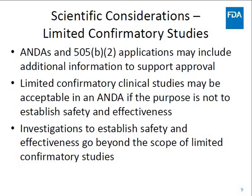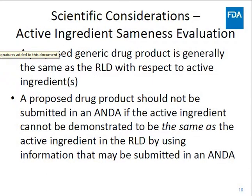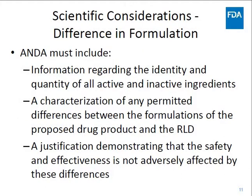Moving to scientific considerations: both an ANDA and a B2 application may include additional information to support approval of the proposed drug product. Limited confirmatory studies may be acceptable in an ANDA provided that the purpose is not to establish safety and effectiveness. If the safety and effectiveness of a proposed drug product must be established by investigations, these investigations go beyond the scope of a limited confirmatory study that may be in an ANDA. Section 505 of the Act generally requires that a proposed generic drug product demonstrate that it is the same as the RLD with respect to the active ingredient or ingredients. If the active ingredient in a proposed drug product cannot be demonstrated to be the same as the active ingredient in the RLD using information and data that may be submitted in an ANDA, the proposed drug product should not be submitted for approval as an ANDA.